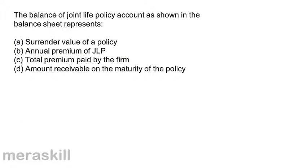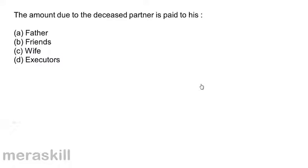Next. The balance of joint life policy account as shown in the balance sheet represents: A, surrender value of a policy; B, annual premium of joint life policy; C, total premium paid by the firm; D, amount receivable on the maturity of the policy. The balance of the joint life policy account in the balance sheet is always at the surrender value. Answer is A.